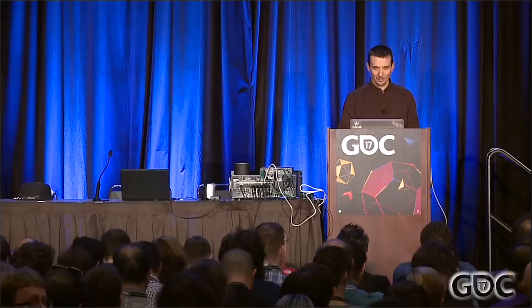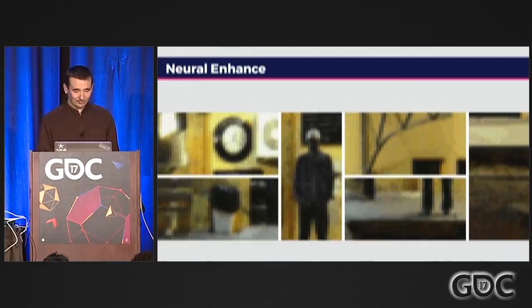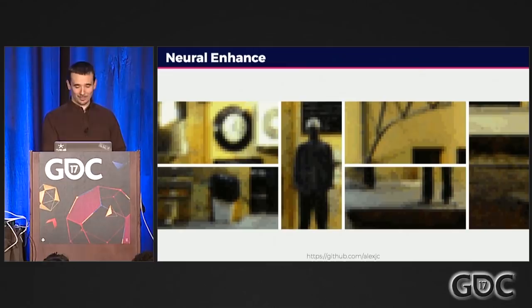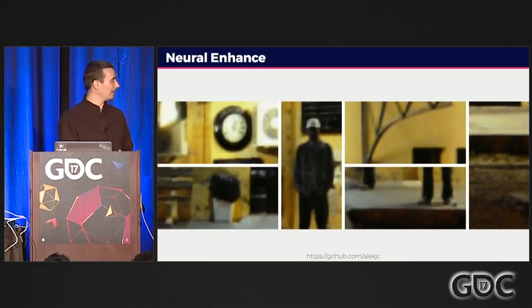Thanks for coming — that's an amazing turnout. My name is Alex. I'm a co-founder at Creative AI, and we apply lots of AI techniques into creative industries. One of those is deep learning, but that's more of a hobby of mine. I apply algorithms from recent papers I've read and put them onto GitHub, including one I did recently called Neural Enhance. You can find the code at github slash Alex JC.